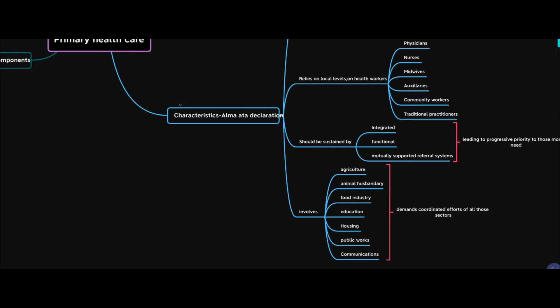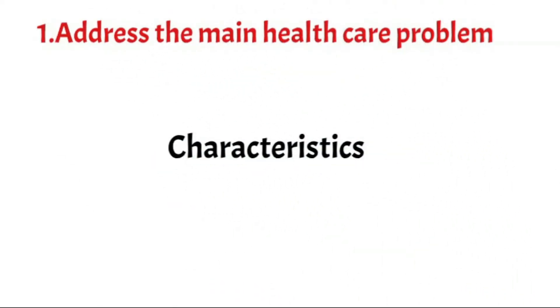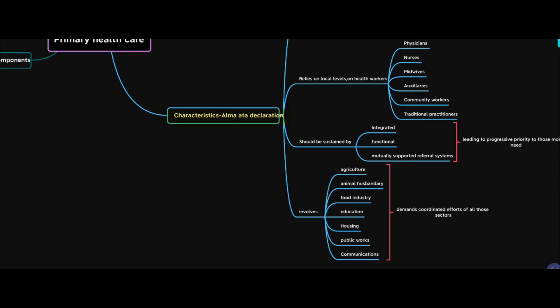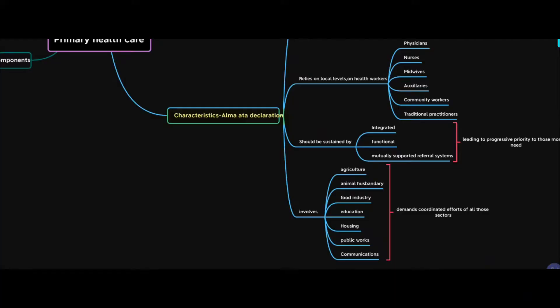Coming to the characteristics of primary health care according to the Alma-Ata Declaration, there are four characteristics. The first one is that it should address the main health care problem — because it's primary health care, it's supposed to address your health care problems.